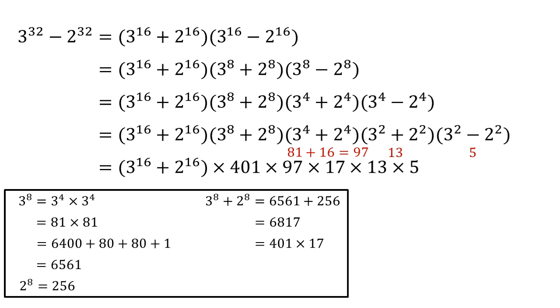So now we know that 3 to the 32 minus 2 to the 32 is equal to 3 to the 16 plus 2 to the 16 times by 401 times 97 times 17 times 13 times 5. Those last four numbers are all primes, they're all lower than 100. So our answer is 5, 13, 17 and 97.